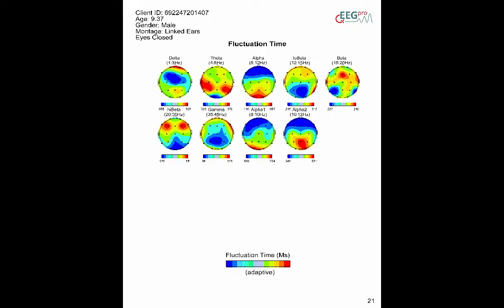The fluctuation time analysis in the QEEG PRO report represents the average time between the medium power crossings.